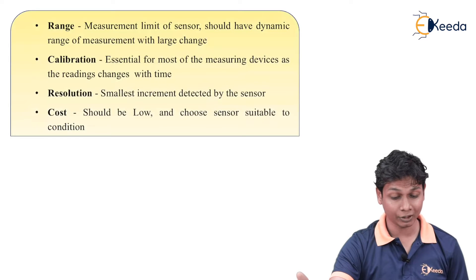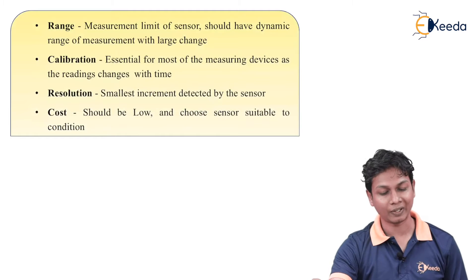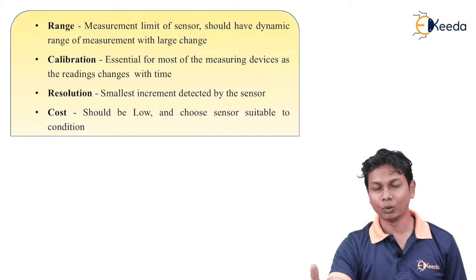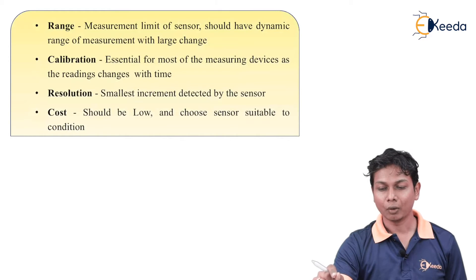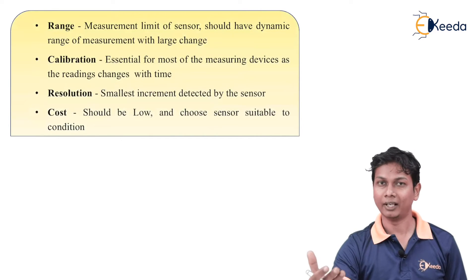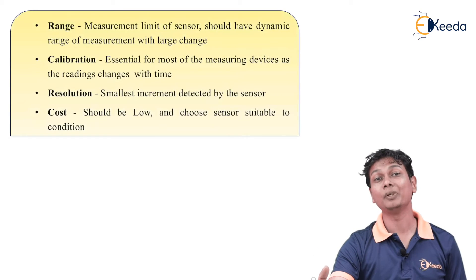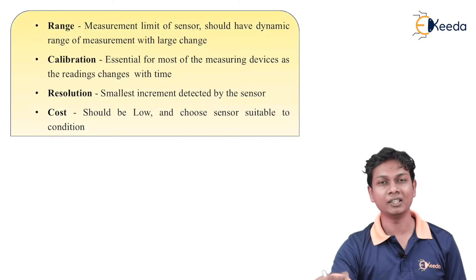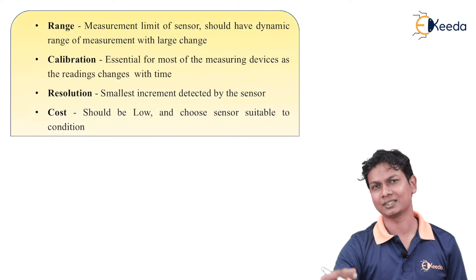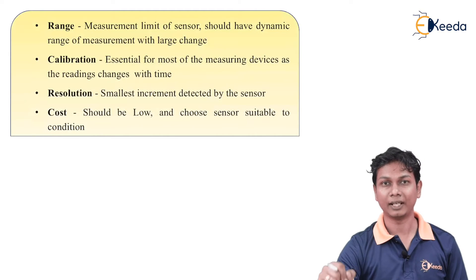The next part is calibration. Calibration is essential for most measuring devices as the readings change with time. First, the sensor is assembled in a particular condition or area and it works. But as time goes on, the sensitivity can be lost. In the ideal way, the calibration of a sensor — meaning the sensitivity of a particular sensor — should not be lost. That is called calibration.